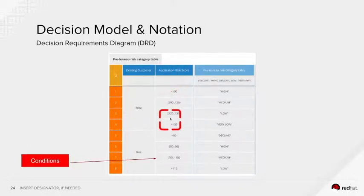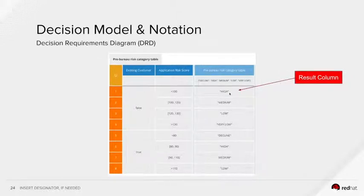And it's using the Friendly Enough Expression Language to express the logic. And then, last but not least, is the action or result column. Whenever a particular condition is met, this is the outcome you expect. For example, if your application risk score is less than 100, then the outcome is that the risk is high.